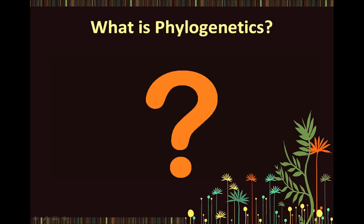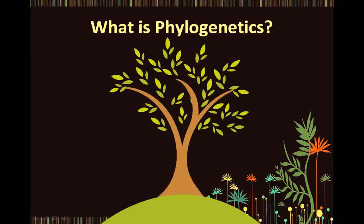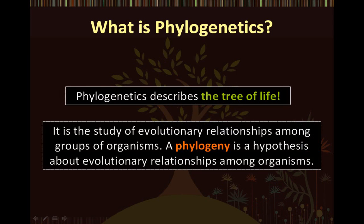We will begin our discussion of phylogenetics with the basic question: what is phylogenetics? Phylogenetics describes the tree of life. It is the study of evolutionary relationships among groups of organisms. A phylogeny is a hypothesis about evolutionary relationships among organisms.